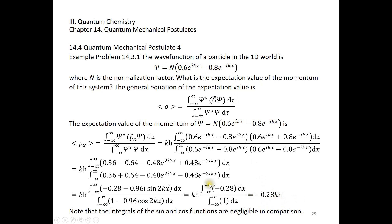Another thing I want to emphasize is how we integrate from negative infinity to positive infinity. We do not do that directly. We replace each infinity with a limit L — integrating from negative L to positive L. On top, you have negative 0.28 times 2L. On the bottom, you have 1 times 2L. Then 2L and 2L cancel because they appear on both top and bottom, and we get negative 0.28 kh-bar. This is simply a mathematical trick to evaluate this kind of integral.